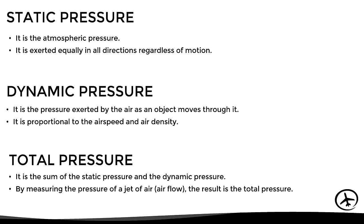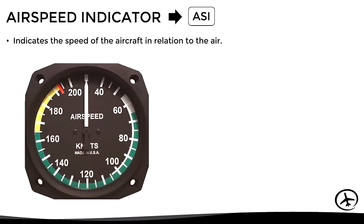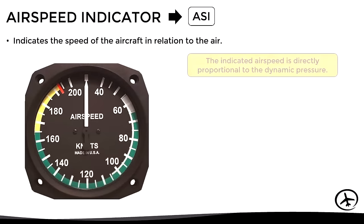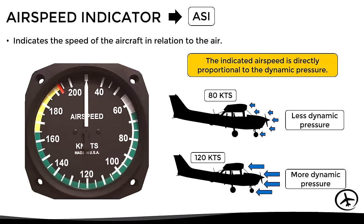The faster we move, the higher the dynamic pressure, and vice versa. Total pressure corresponds to the sum of static and dynamic pressure. The airspeed indicator, abbreviated as ASI, is an instrument that indicates the speed of the aircraft relative to the air. Airspeed is directly proportional to dynamic pressure, so an aircraft flying at 80 knots will experience less dynamic pressure than if flying at 120 knots. We can say the airspeed indicator is actually a dynamic pressure gauge calibrated to indicate airspeed.